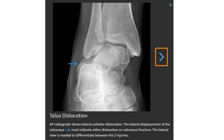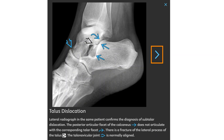AP radiograph shows a lateral subtalar dislocation. The lateral displacement of the calcaneus indicates either dislocation or calcaneus fracture, and the lateral view is needed to differentiate between these two injuries. The lateral radiograph in the same patient confirms the diagnosis of subtalar dislocation. The posterior articular facet of the calcaneus does not articulate with the corresponding talar facet, and there is a fracture of the lateral process of the talus. The talonavicular joint is normally aligned.